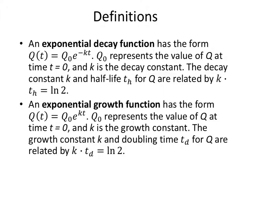Okay, so let's start with some definitions. An exponential decay function has the form Q(t) = Q₀e^(-kt), where Q₀ represents the value of Q at time t = 0, and k is the decay constant. The decay constant k and half-life t_h for Q are related by k·t_h = ln 2.